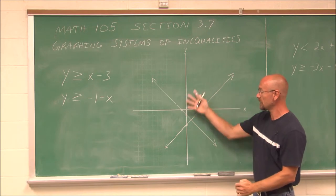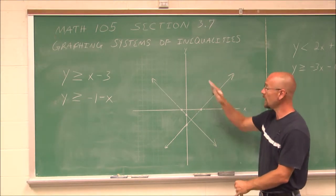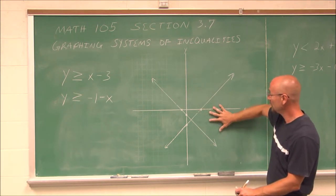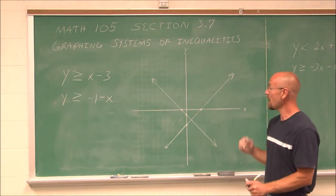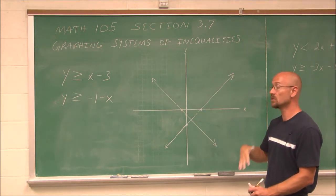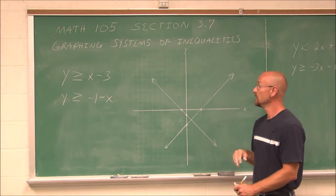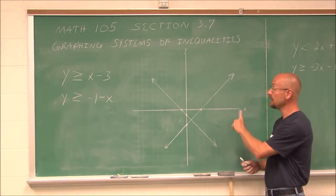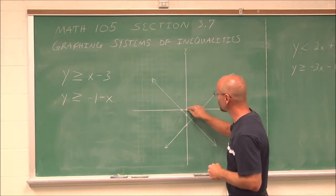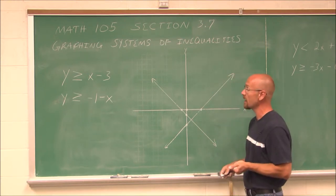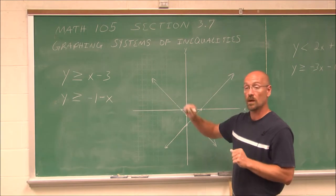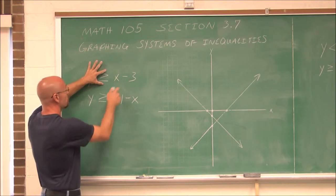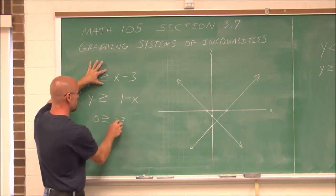Now it's time to choose what area. If we look at how these lines divide up the graph, we actually have four areas. What we have to do is choose a test point, just like we did when graphing a single linear inequality in two variables. I'm going to choose a test point that is not on either of these lines. My go-to point of (0, 0) is available because none of the lines pass through that. So I'm going to test it in both equations one at a time. If I put (0, 0) in here, I get 0 is greater than or equal to 0 minus 3, which gives 0 ≥ −3.